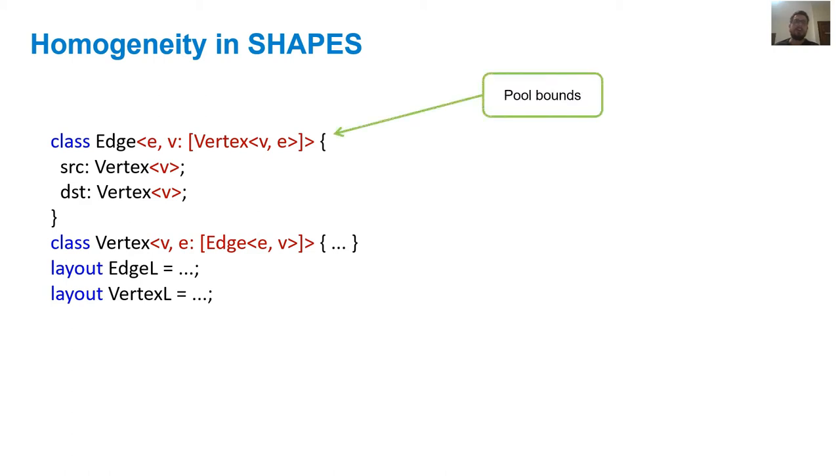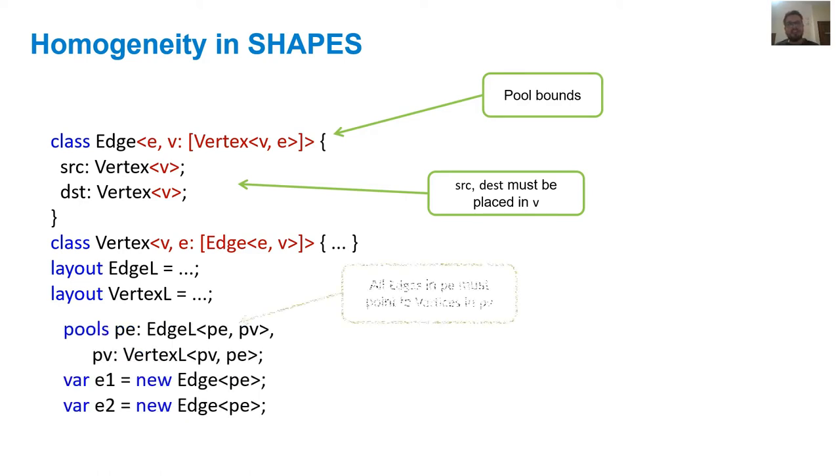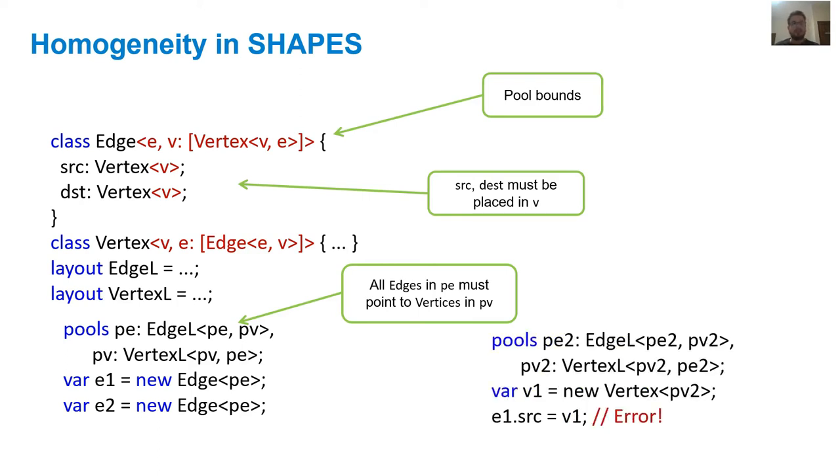For example, in the revised code for class edge and vertex, we have introduced a new pool bound for pool V in class edge, and a new pool bound for pool E in class vertex. These pool bounds effectively assert that any vertex living in pool V must only reference the edges that live in pool E, and vice versa. That is, when you go ahead and construct pools PE and PV, edges residing in PE must reference the vertices in PV. Similarly, for pools PE2 and PV2, edges residing in PE2 must reference the vertices in PV2. The very last statement in our example violates this requirement because E1 can only reference vertices from PV and V1 belongs to pool PV2.